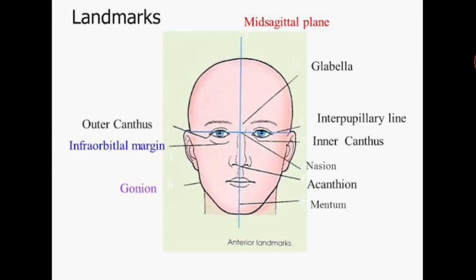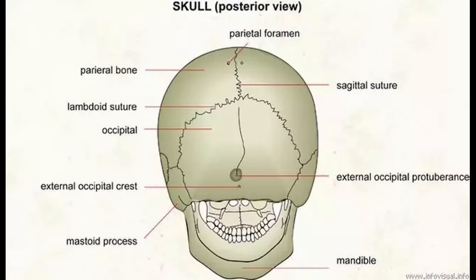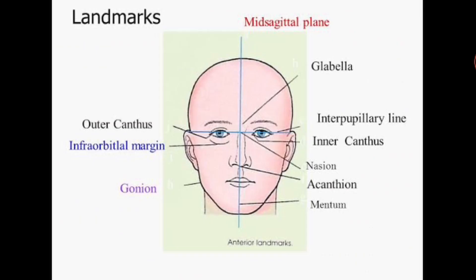The gonion, or the angle of the mandible, is also an important skull landmark. Our next landmark is the external occipital protuberance, also known as the inion — a bony prominence on the occipital bone. These were the landmarks of the skull.